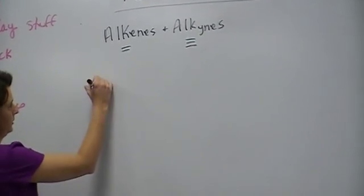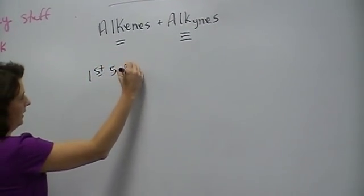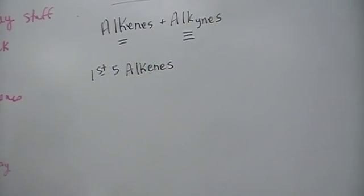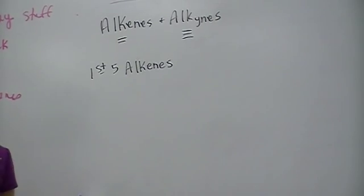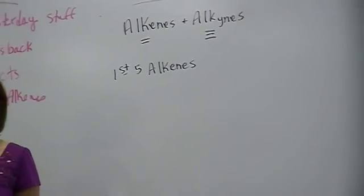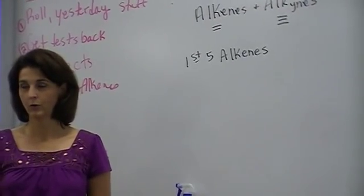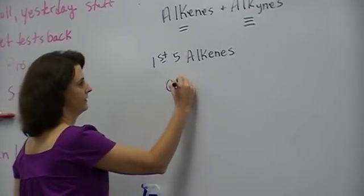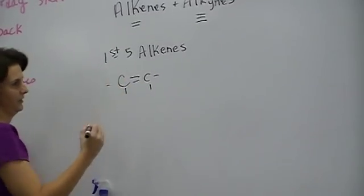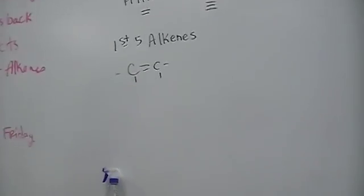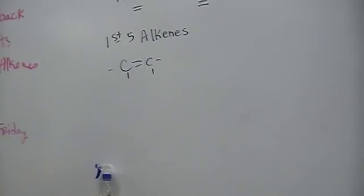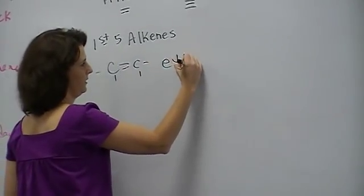So I'm going to do the first five alkenes here. After I got a double bond, what do you think the first alkene would be called? Is it methane? How about this? I'll draw it. Ethene. The first alkene is ethene, because you can't have a double bond between two carbons when you only got one carbon.